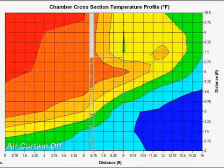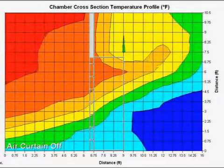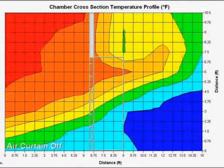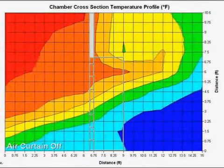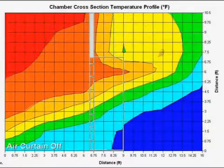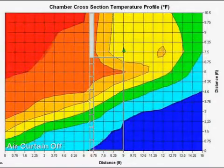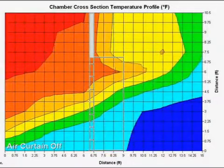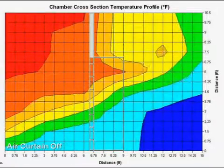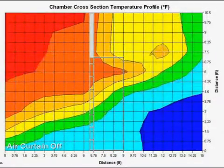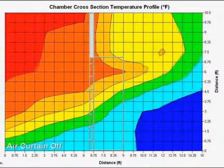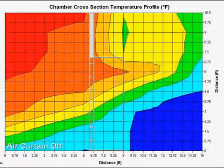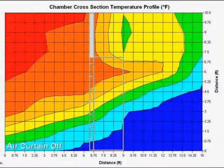With the air door turned off, we can see the cold temperatures, in blue, where the cold air is flowing through the bottom of the opening, and the hot temperatures, in red, where the hot air is moving through the top of the doorway.